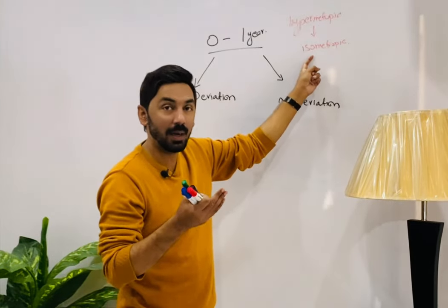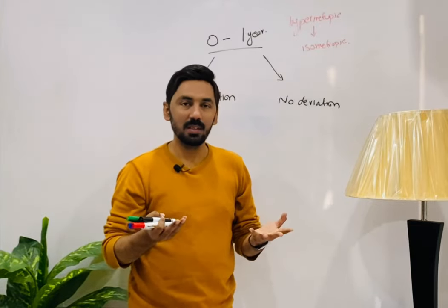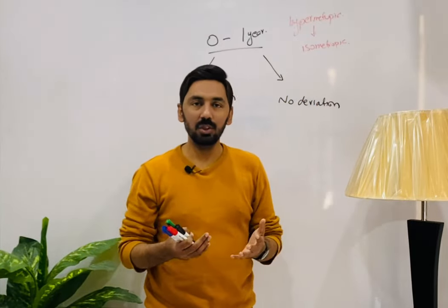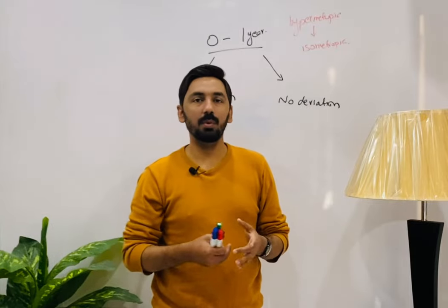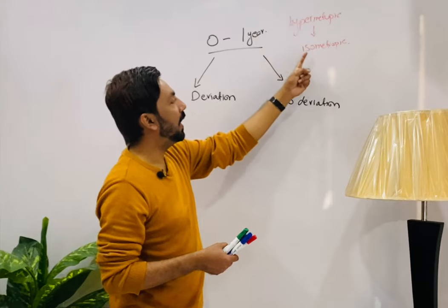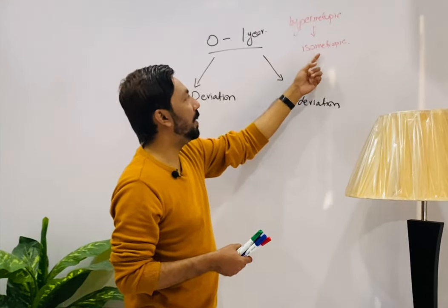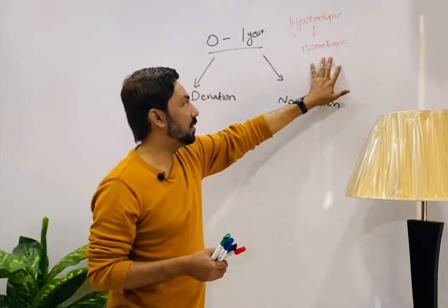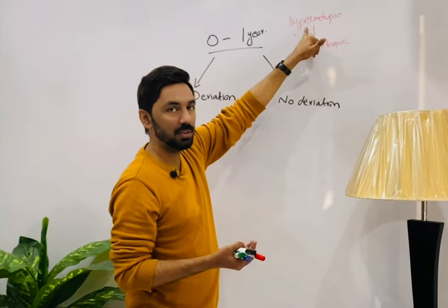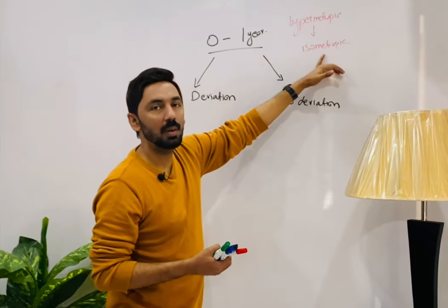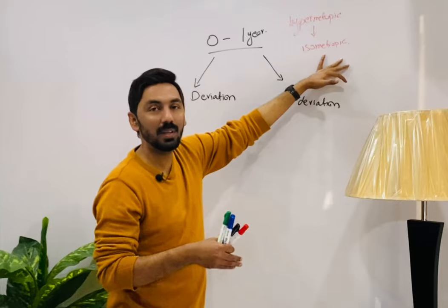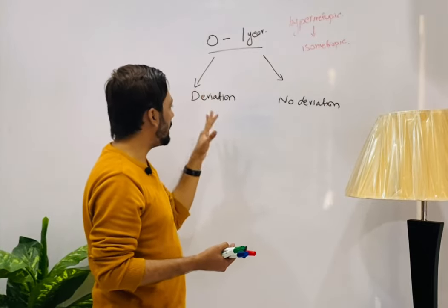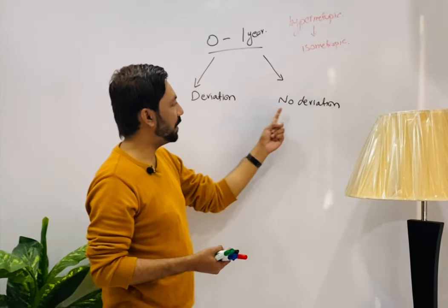Isometropia means the prescription in both eyes is the same. Anisometropia means the refraction in both eyes is different. So our patient has isometropic hypermetropia — the same plus power deficiency in both eyes — and the age is from zero to one year. We now consider whether there is deviation or no deviation.